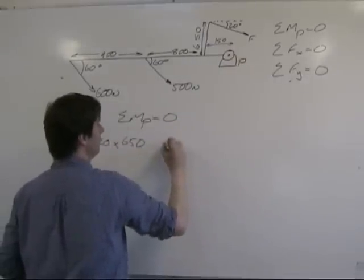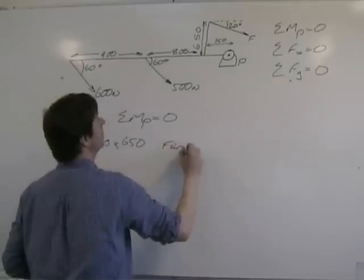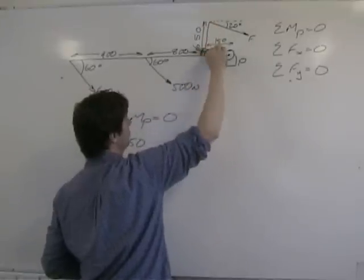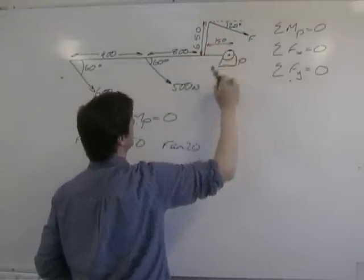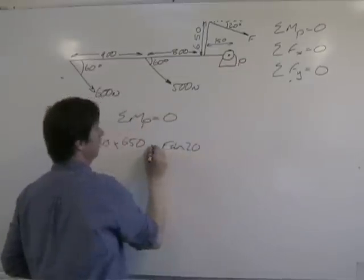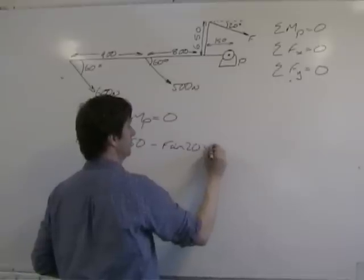Now we have the y component, F sin 20, which is pulling down that way, pushing it anti-clockwise about that pivot point. The distance is 150, anti-clockwise is negative, so that's times 150.